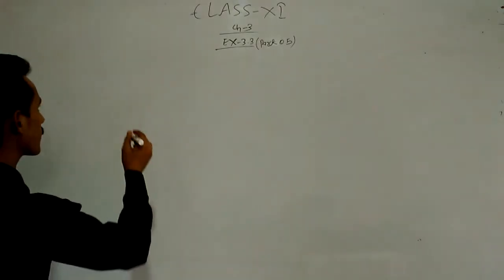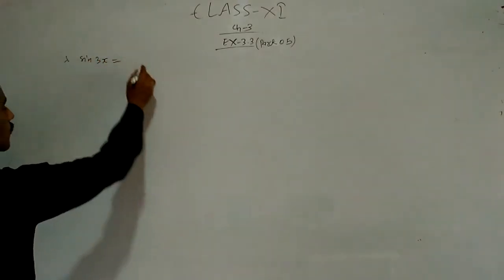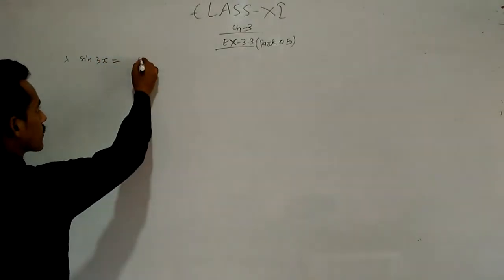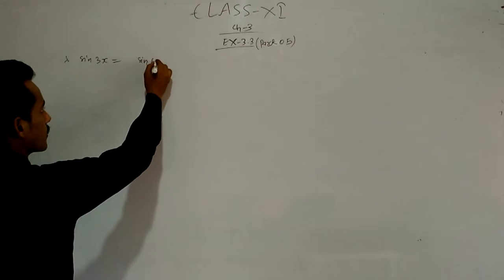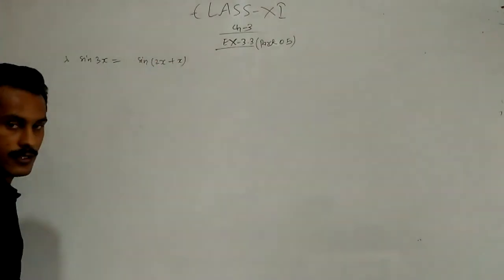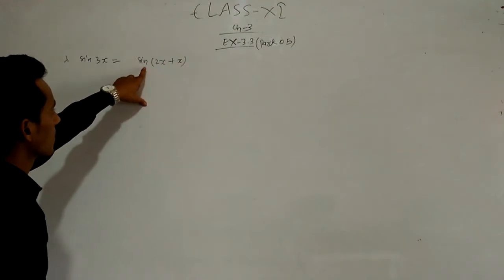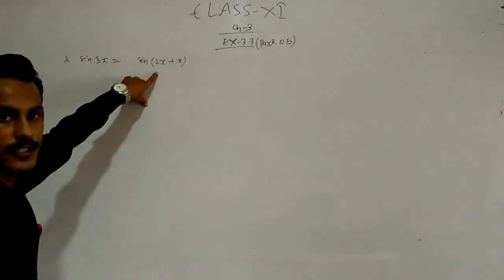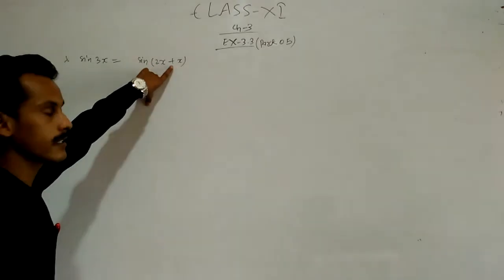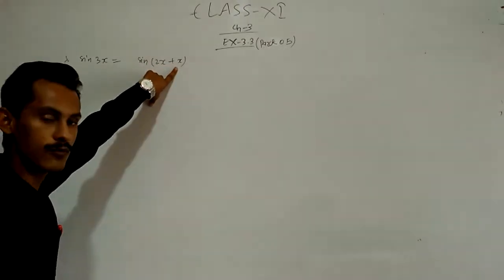So sin 3x — what can you write for sin 3x? You can write it as sin(2x + x). Yes or no? Very good. Now you can expand it using the formula for sin(x + y), taking 2x as x and x as y.